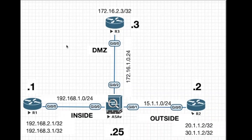This is the topology I am going to use for this lab. Here I am using three routers and one ASA firewall. I have already configured the routers and ASA firewall interfaces with IP addresses. Now we are going to see how to configure dynamic routing in Cisco ASA firewall.